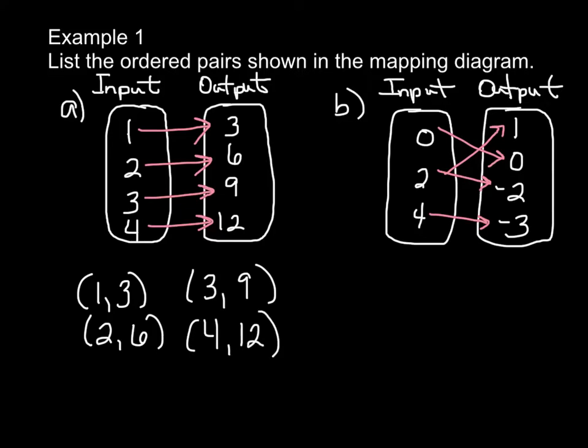In B, we have inputs of 0, 2, and 4, and outputs of 1, 0, negative 2, and negative 3. So our ordered pairs would be (0,0), (2,1), (2,-2), and (4,-3).